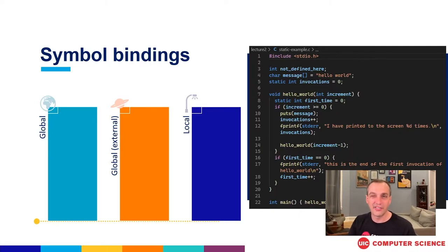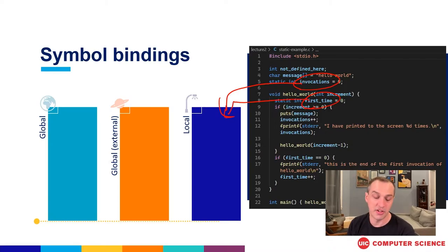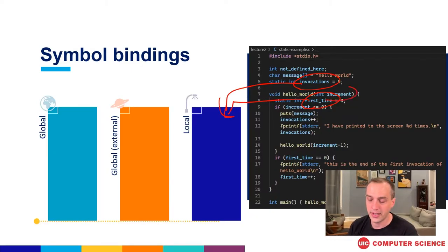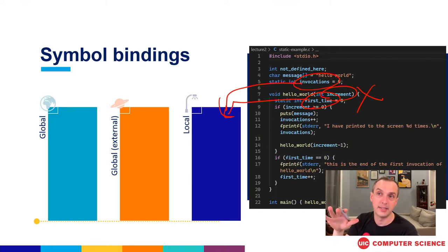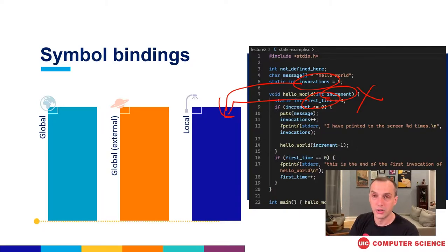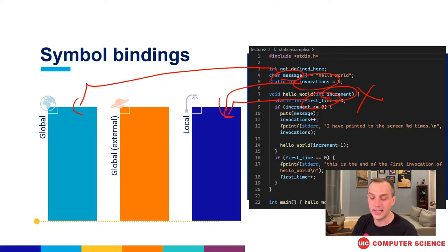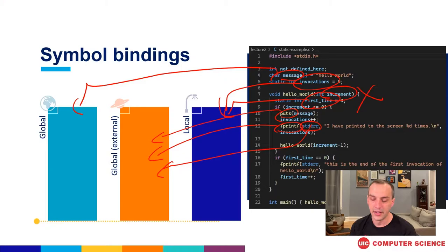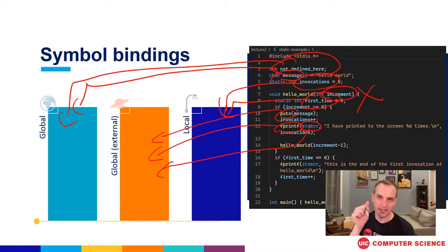Another important property is the binding. Static symbols are given local scope, and everything else is given global scope — so every other symbol ends up in the symbol table as global type. Importantly, 'increment' is not a symbol; it wasn't in our VS Code window when we looked at the symbol table. We've got both global and external global symbols. Global symbols like 'message' are defined locally. Things like fprintf, stderr, and puts are external symbols defined somewhere else. 'Not defined here' is itself also a global symbol because it was declared in this file.